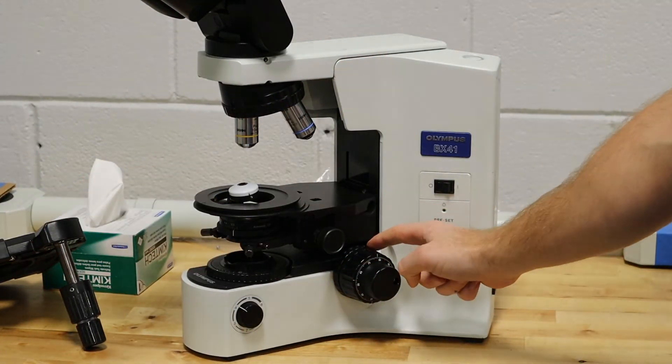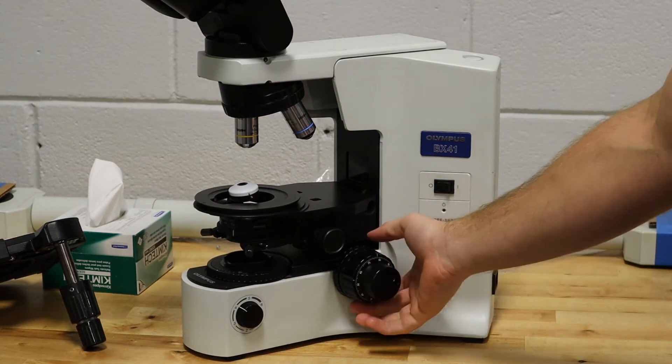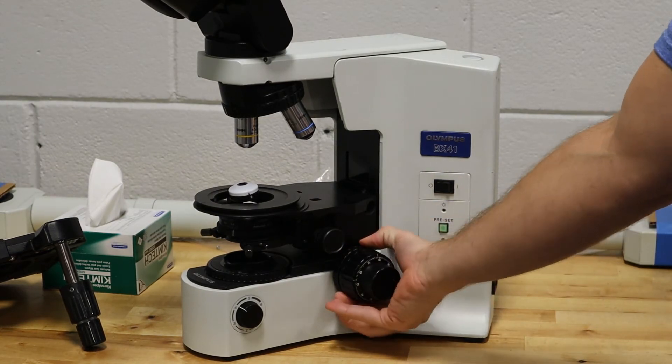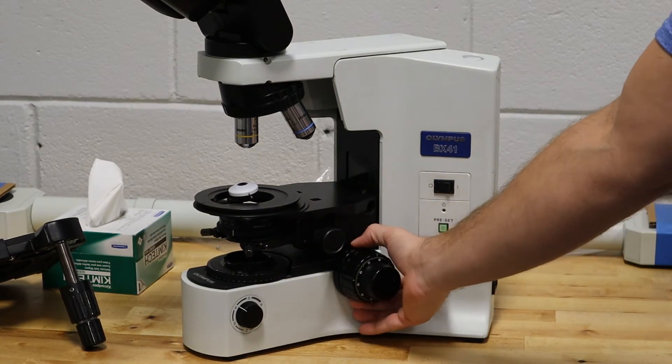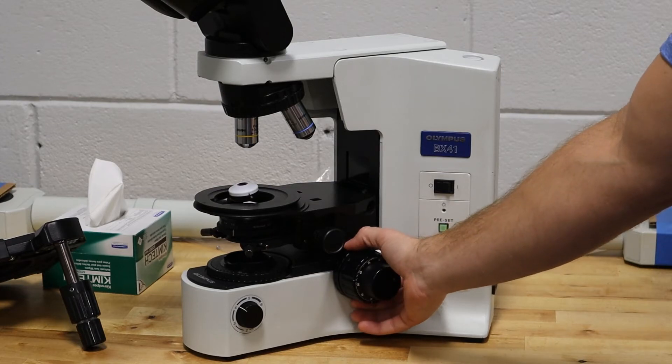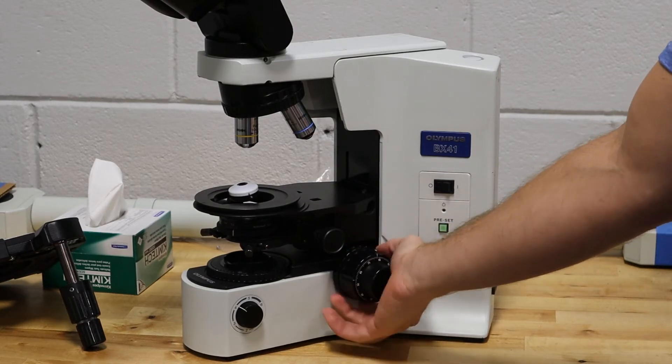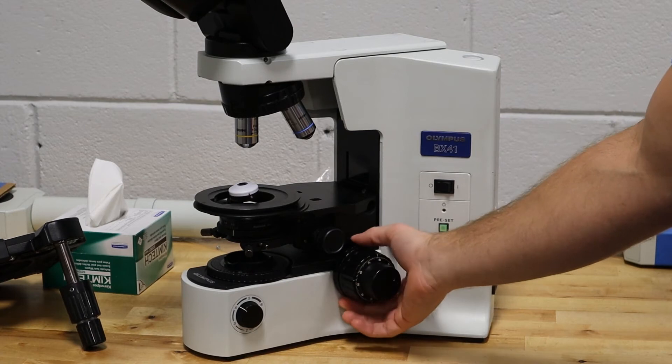This inner ring on the right side of the microscope, if you turn it to the right, it's going to increase the tension. If you back it to the left or counterclockwise, it's going to loosen the tension.